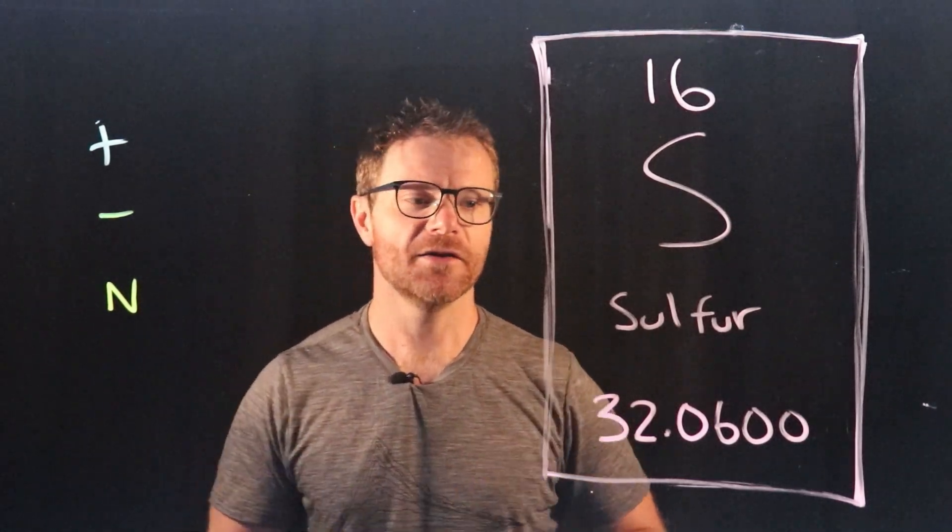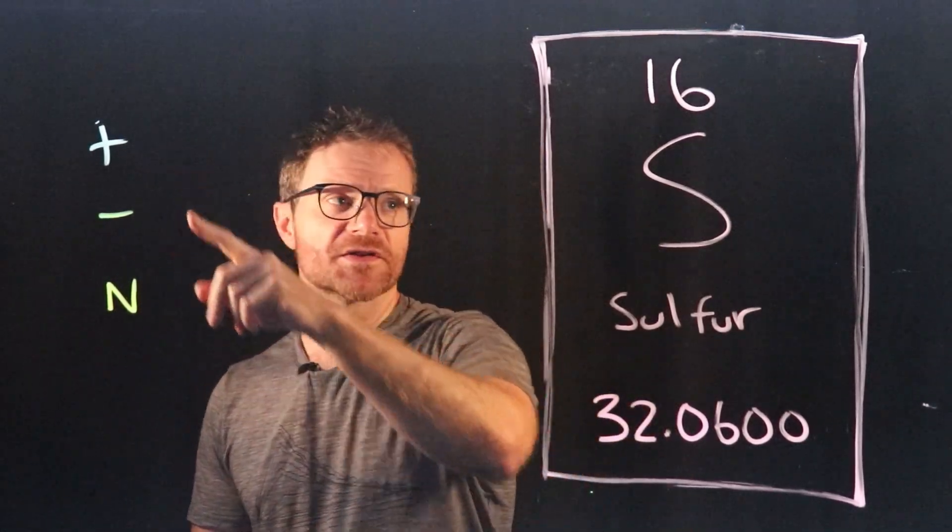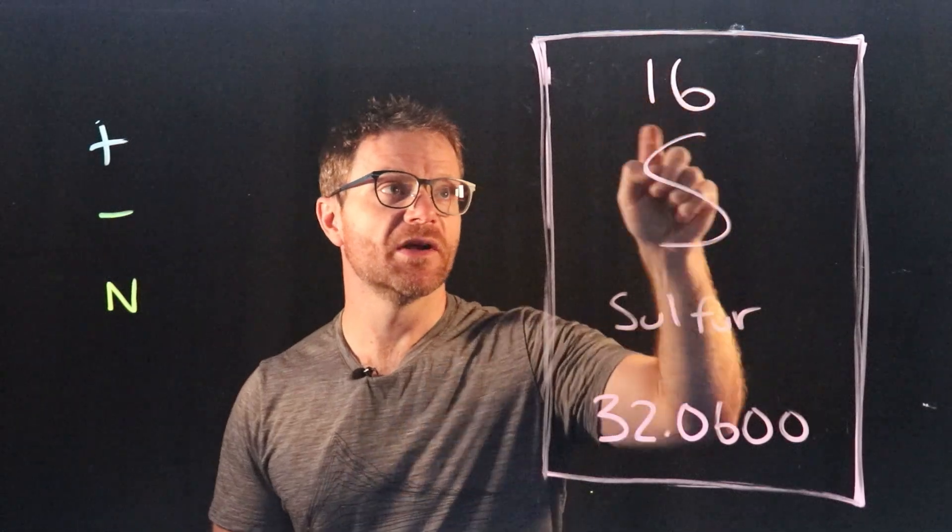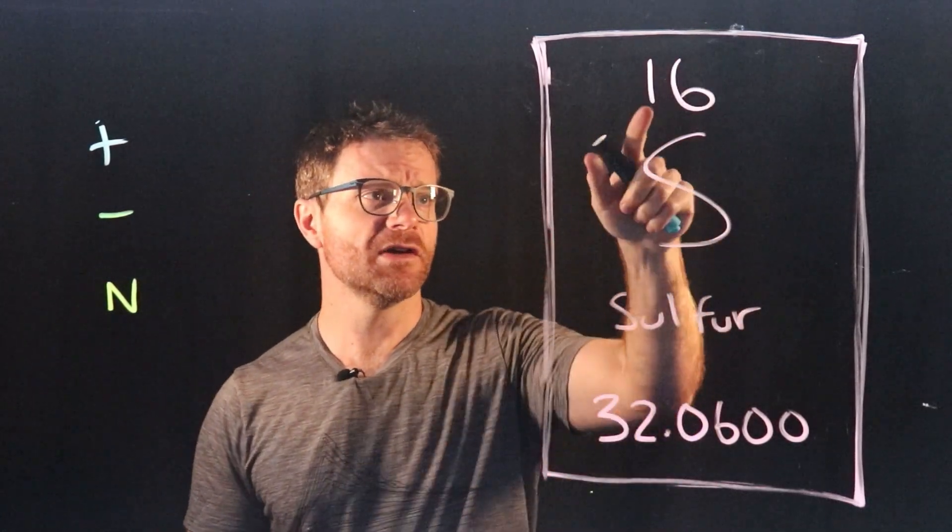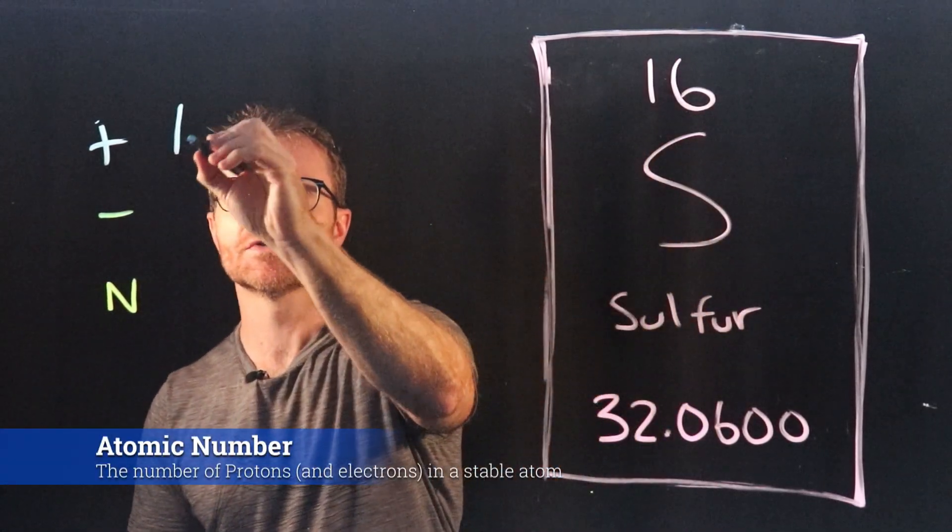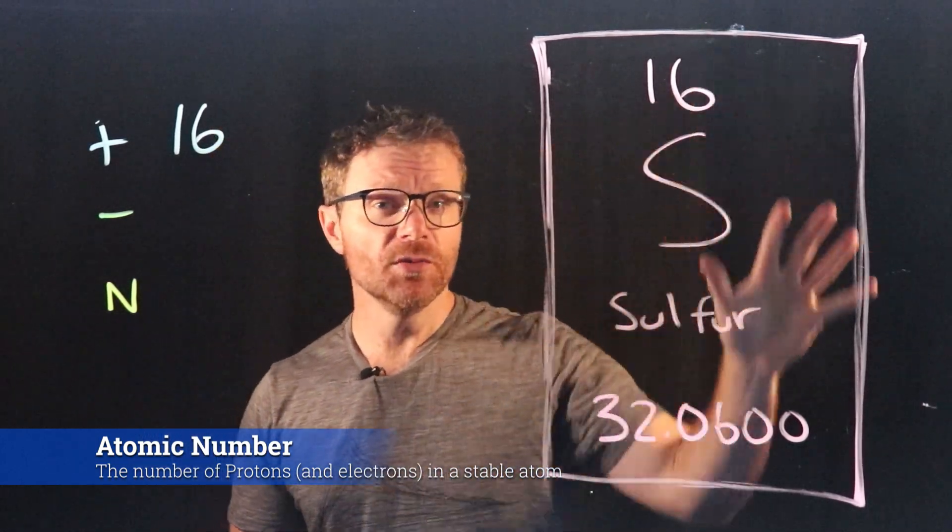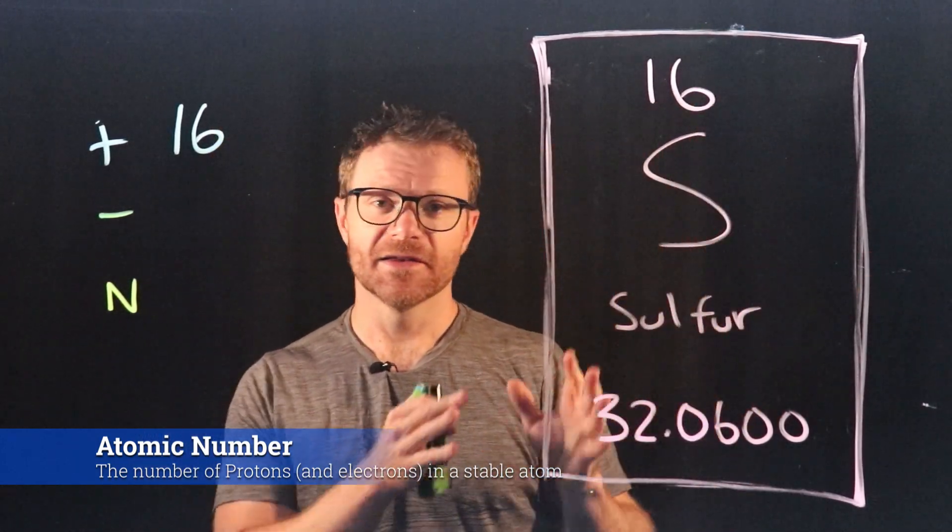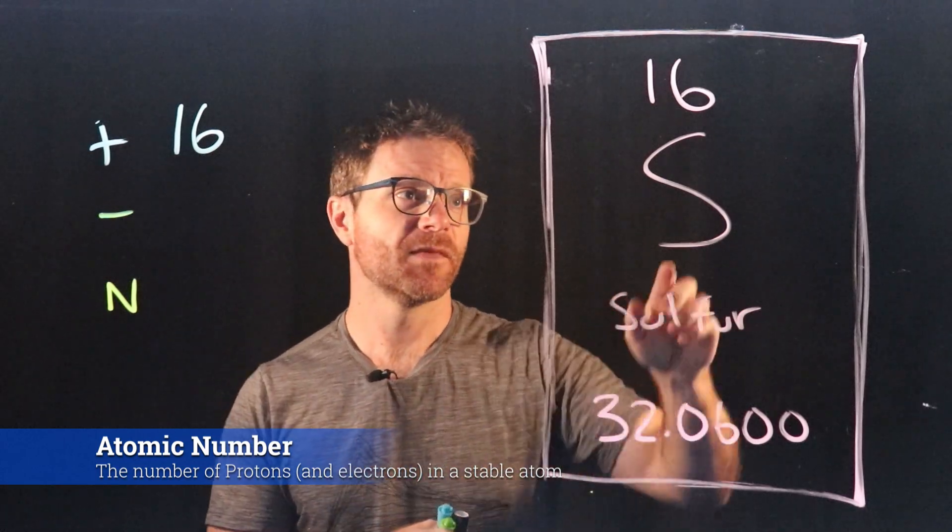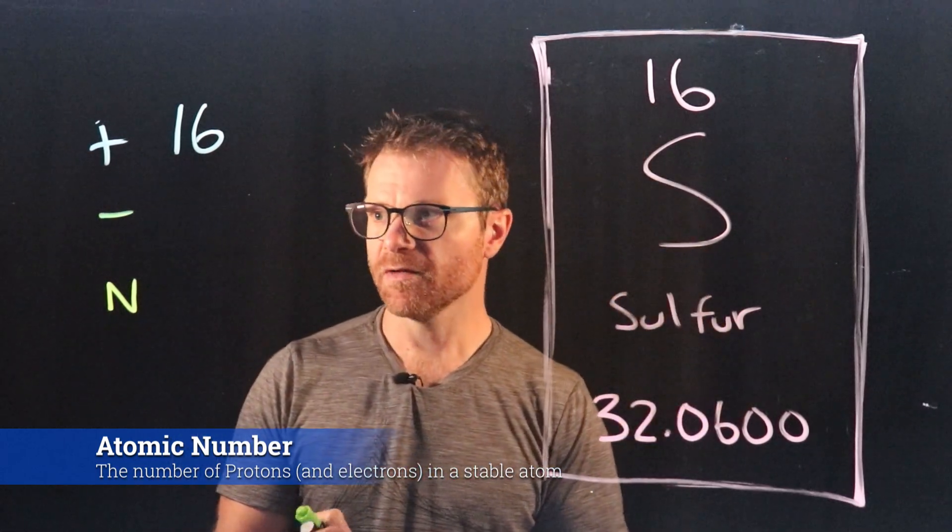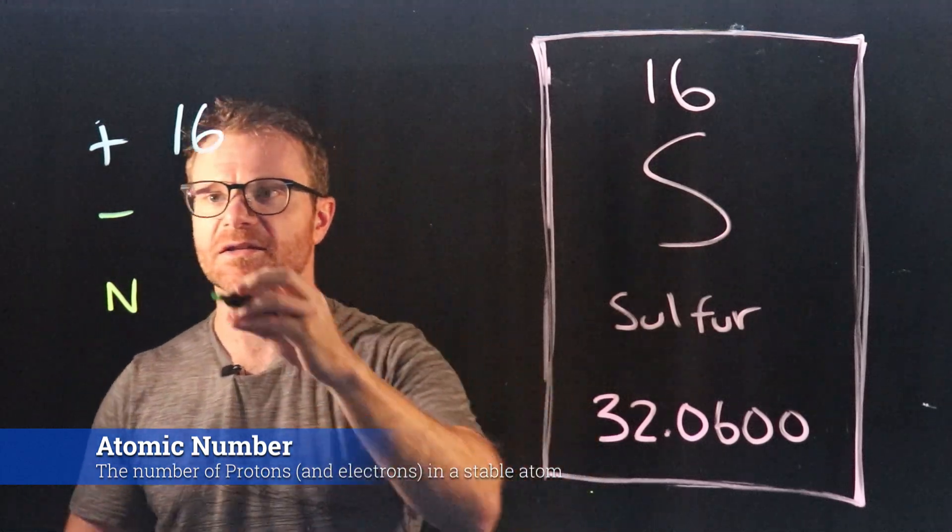They're neither positive nor negative. Okay protons are the easy one. We just look at the atomic number. The atomic number is always the number of protons, and in this case a single atom of sulfur has 16 protons. Now assuming that this isn't an ion, that this is a stable element, then it's also going to have always the same number of electrons, in this case 16.